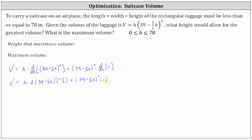To simplify, notice how both products contain one factor of (39 minus one half h). So let's factor out (39 minus one half h) from both products. If we factor (39 minus one half h) from the first product, we're left with h times 2 times negative one half, which is negative h. Then, if we factor one factor of (39 minus one half h) from the square of (39 minus one half h), we're left with one factor of (39 minus one half h).